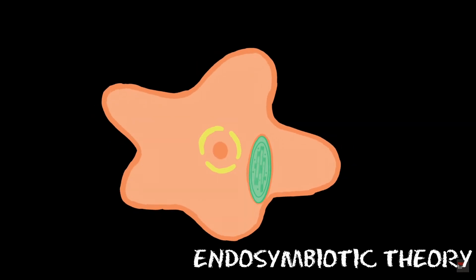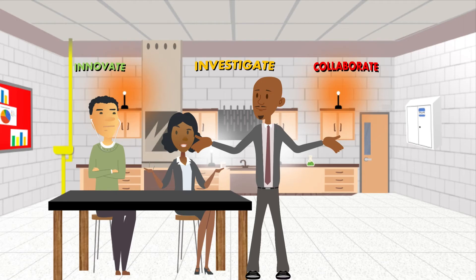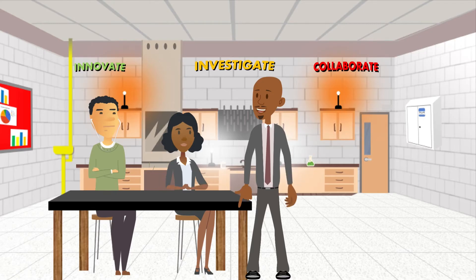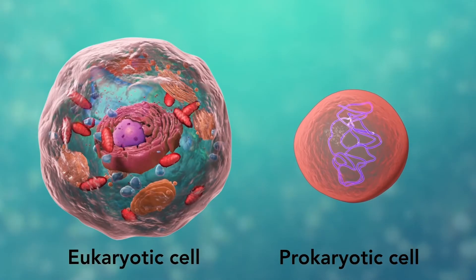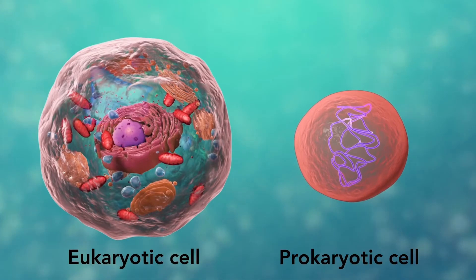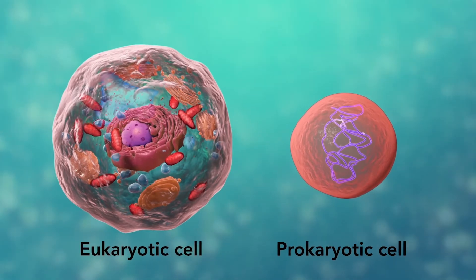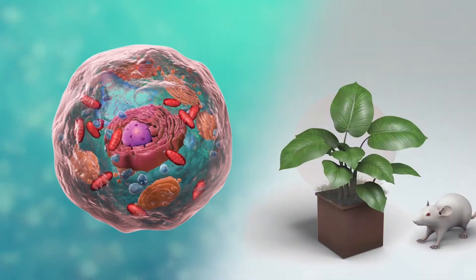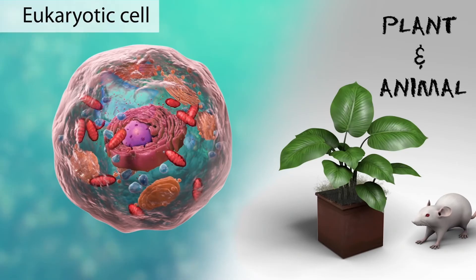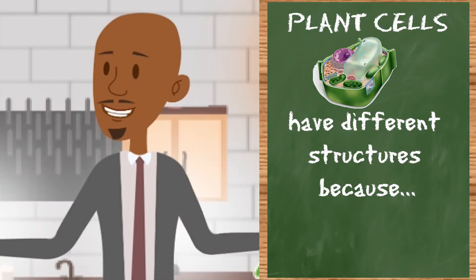In fact, there's evidence suggesting that mitochondria and chloroplasts were actually prokaryotes that were engulfed by larger cells millions of years ago. Wait — chloroplasts? Yes — there are two types of eukaryotic cells: plant and animal cells.